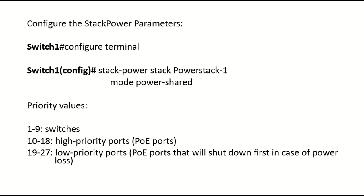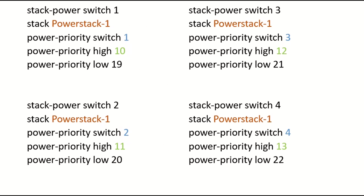We have some priority values we need to add when we configure the parameters for the switches. Values one to nine are the priority values for switches, and then we have values for high priority ports and low priority ports. The low priority ports are PoE ports that will shut down first in case of power loss, which is why we specify priority. The lower the number, the higher the priority.